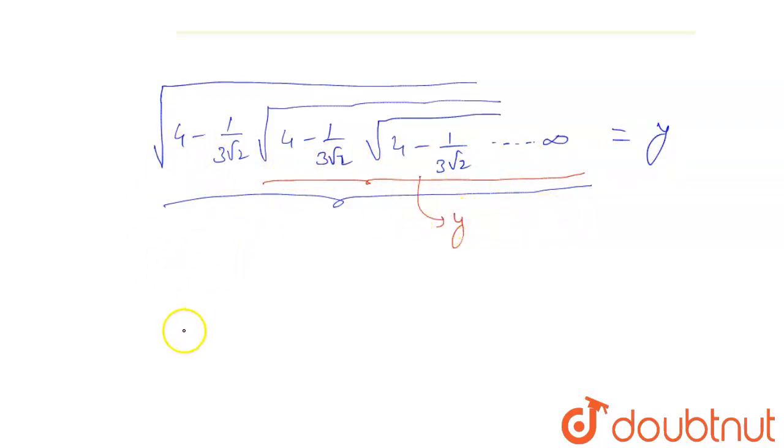So this expression can be rewritten as: square root of 4 minus 1 by 3 root 2 and this whole expression can be written as y again, which is equal to y.